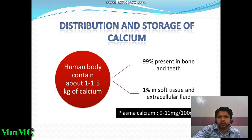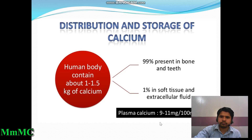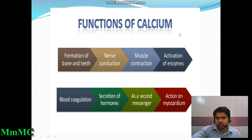Regarding distribution and storage of calcium: of the 1 to 1.5 kg of calcium in our body, 99% is present in bone and teeth and 1% is in soft tissue and extracellular fluid. Plasma calcium is 9 to 11 mg per 100 ml. The functions of calcium include formation of bone and teeth, nerve conduction, muscle contraction, activation of enzymes, blood coagulation, secretion of various hormones, acting as a second messenger, and action on the myocardium.